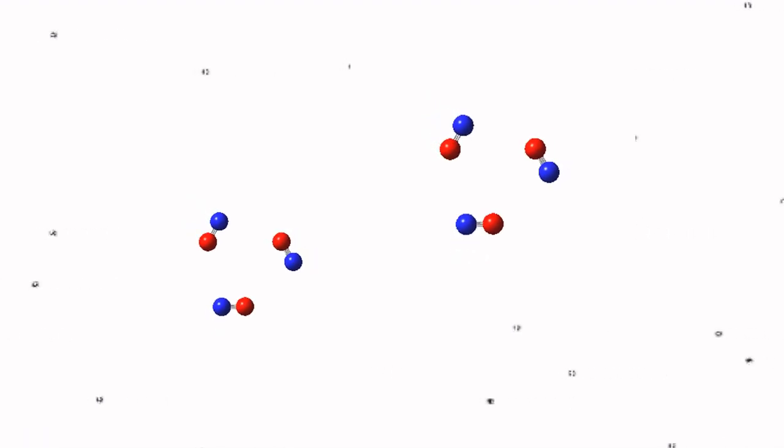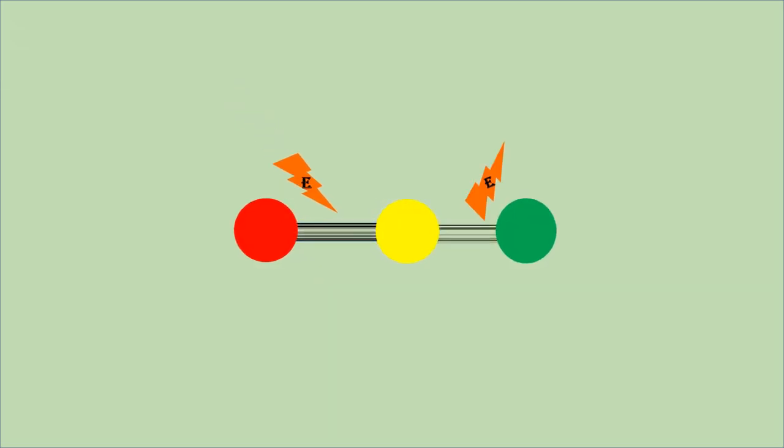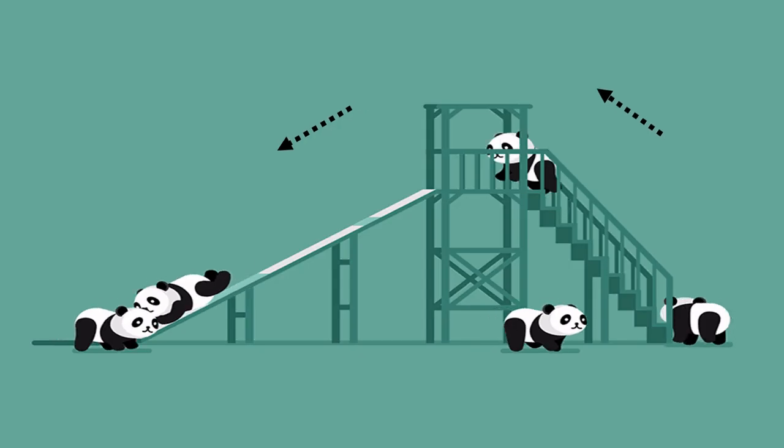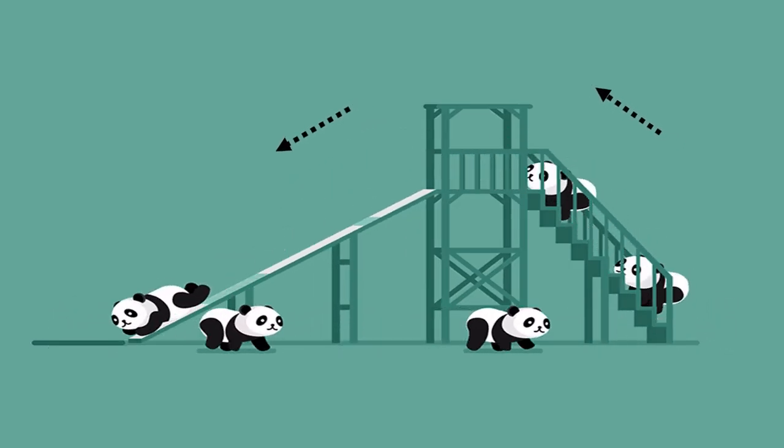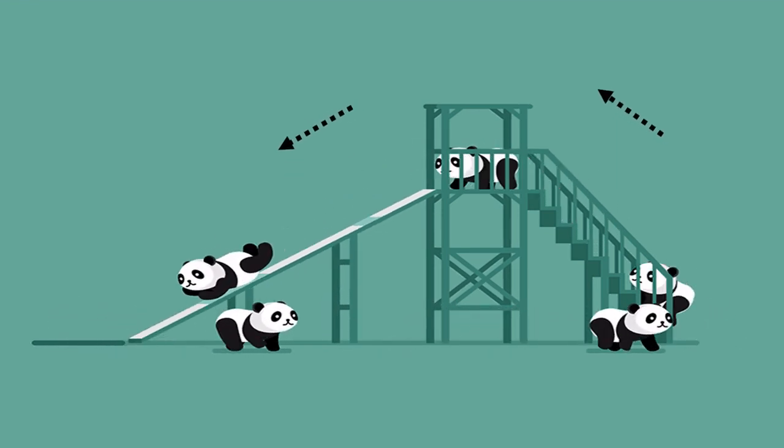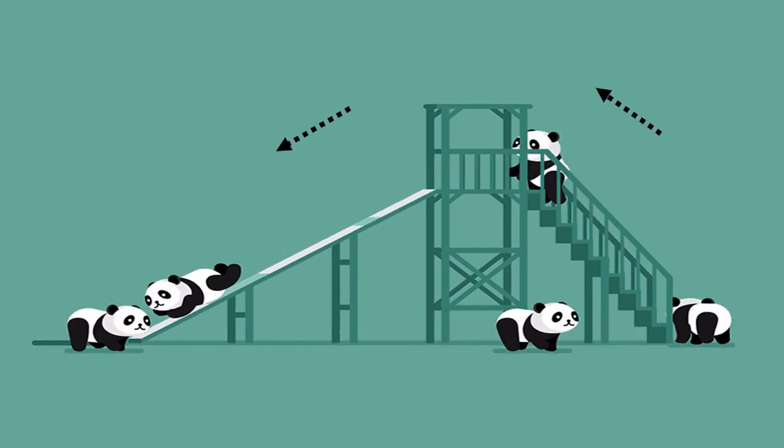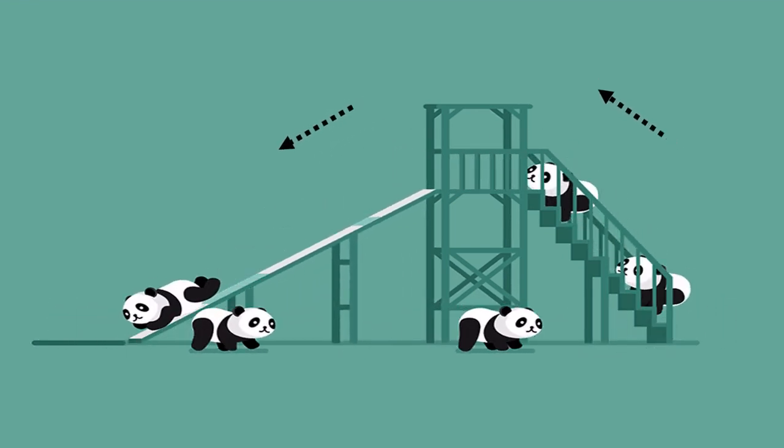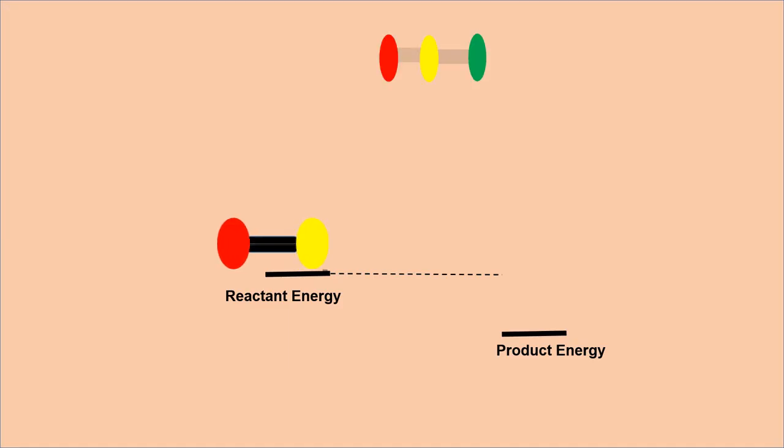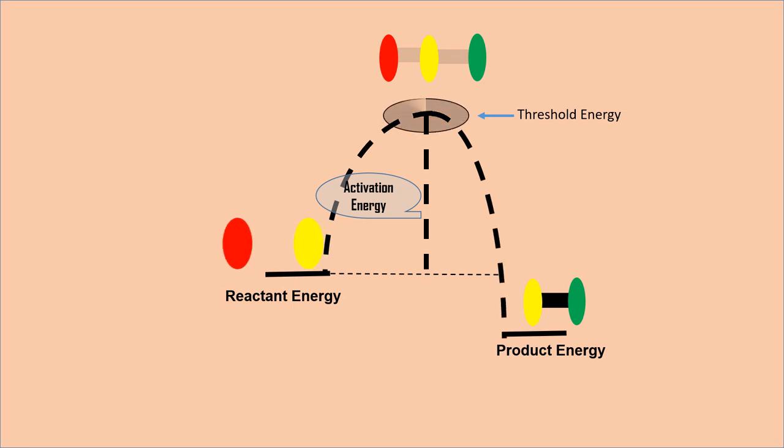In order to break bonds, external energy is required, and in the formation of bonds, energy is released by the system. It can be understood by an example: a garden slide. We first have to invest our energy to reach its top, and then we automatically reach the ground by sliding. Similarly, to break old bonds, energy is required, and just like a garden slide, these bonds have a certain fixed energy level.